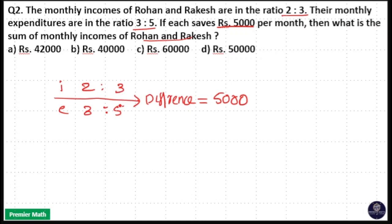The difference between 3 and 5 is 2 units, and the difference between 2 and 3 is 1 unit. To make it equal, take the difference 2 units and multiply it with 2:3. Take the difference 1 unit and multiply it with 3:5.